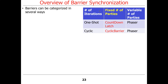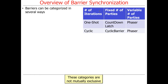Another dimension is how many parties there are — party meaning thread. Is it a fixed number or can there be a variable number? The countdown latch is typically used for a fixed number of things, as is the cyclic barrier, whereas the phaser can be used for variable numbers of things, making it more flexible. These categories are not mutually exclusive, and we'll see more about that later.